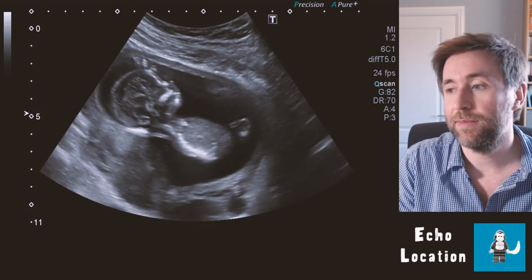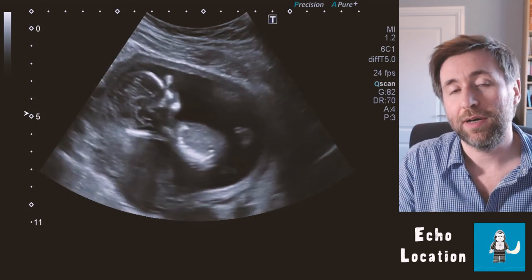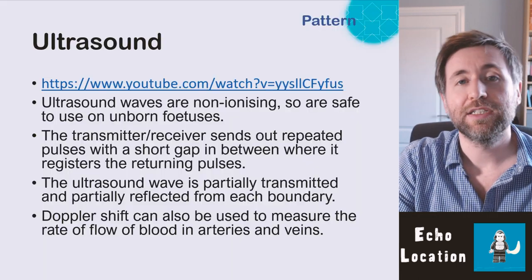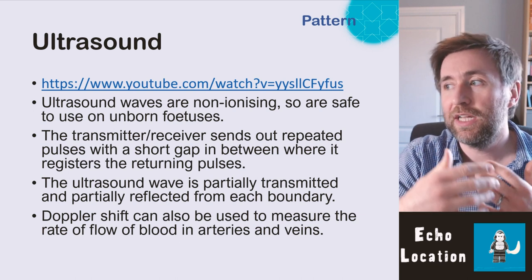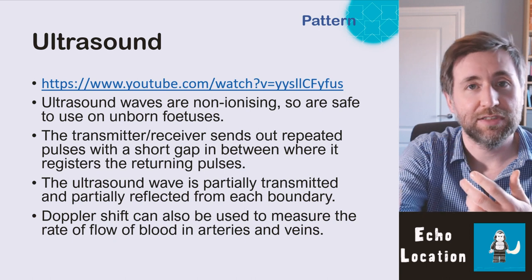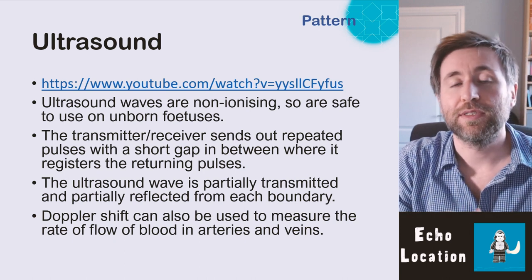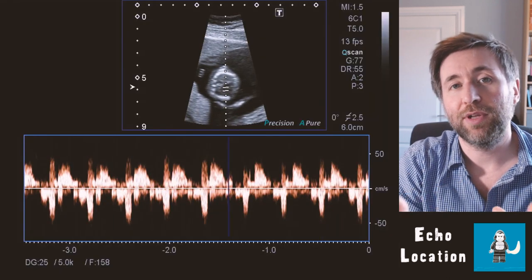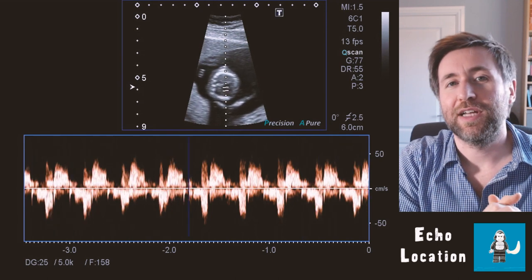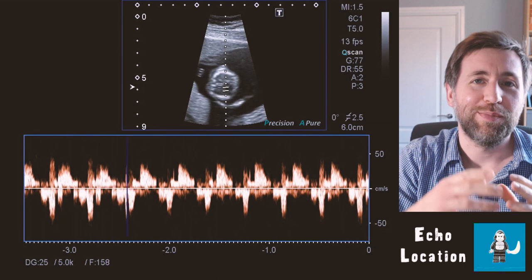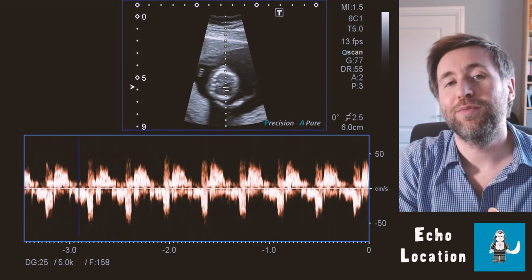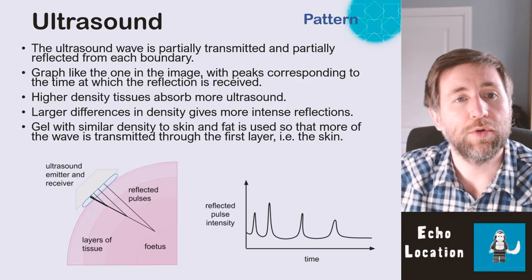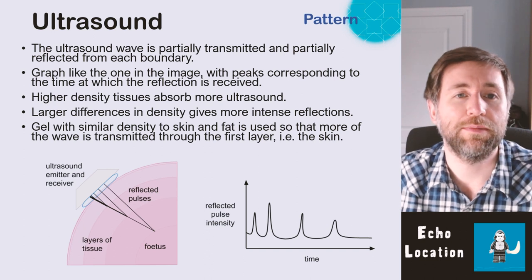An ultrasound wave is partially transmitted and partially reflected at each boundary, so some of the wave keeps going through to the next boundary. This means we can see multiple boundaries, not just one. We can also use Doppler shift — a perceived change in wavelength — to measure the rate of blood flow in veins, allowing us to see blood flowing through a fetus's veins and check whether valves are opening and shutting correctly.